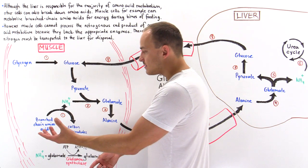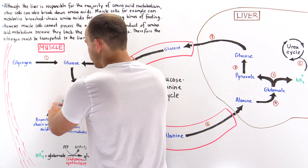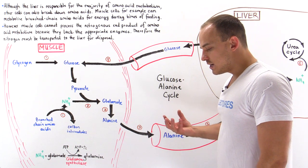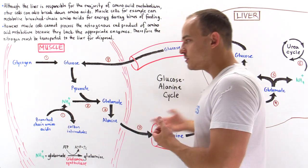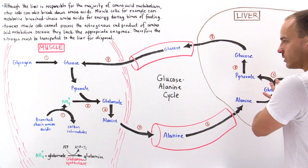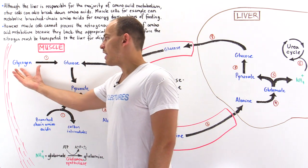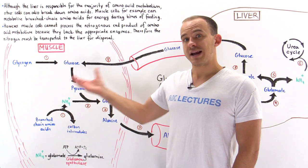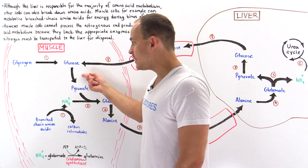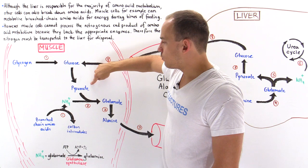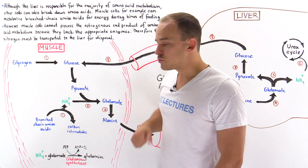Suppose we are fasting. We begin to break down the branched chain amino acids into carbon skeleton intermediates, and we form ammonium as a byproduct. That ammonium must be combined with some carrier molecule to be transported through the blood to the liver, and it is combined with pyruvate. The pyruvate comes from inside our muscle: we break down glycogen stores into glucose, and then break down glucose into pyruvate via glycolysis, generating ATP for the cell.